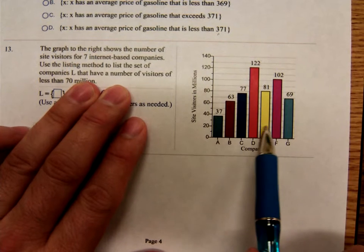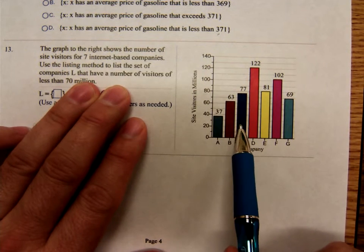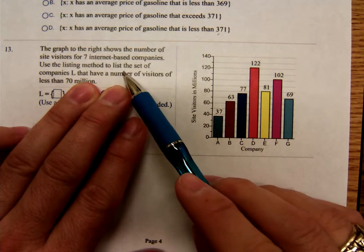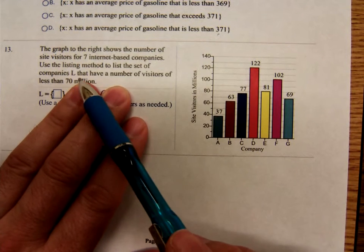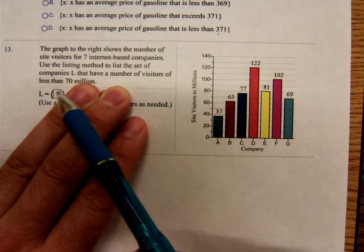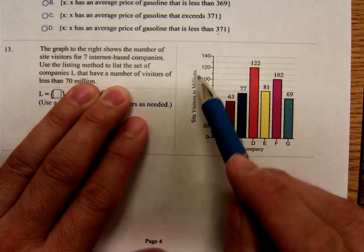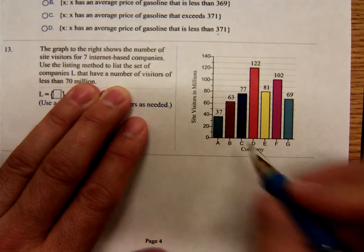The graph to the right shows the number of site visitors for seven internet-based companies. Use the listing method to list the set of companies L that have a number of visitors less than 70 million. So this is site visitors in millions. So which ones are less than 70 million?